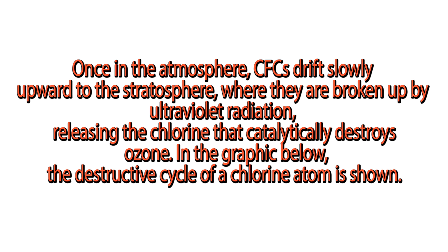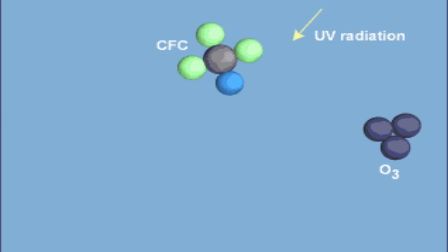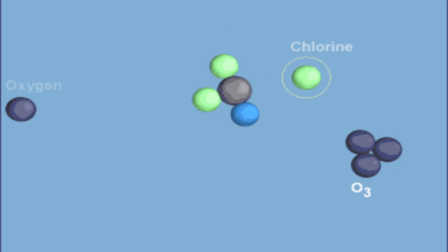Once in the atmosphere, CFCs drift slowly upward to the stratosphere, where they are broken up by ultraviolet radiation, releasing the chlorine that catalytically destroys ozone. In the graphic below, the destructive cycle of a chlorine atom is shown.